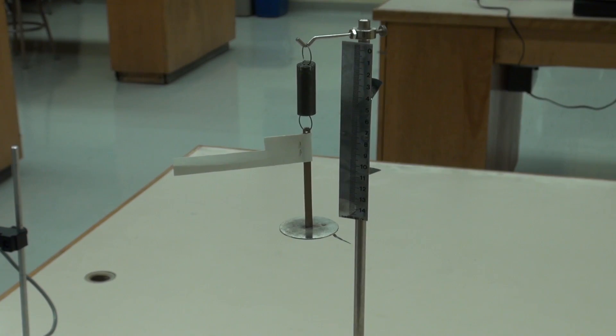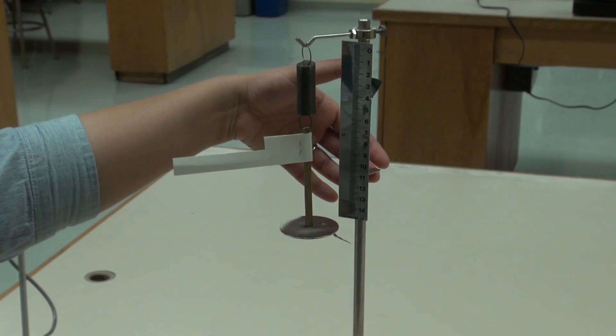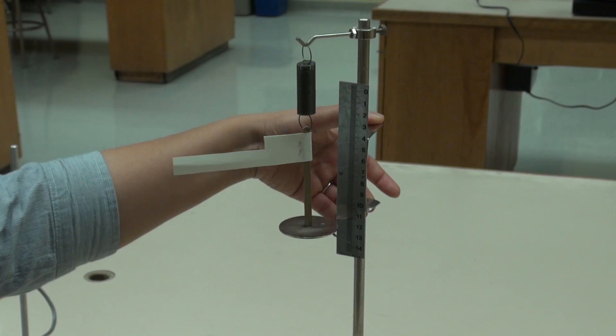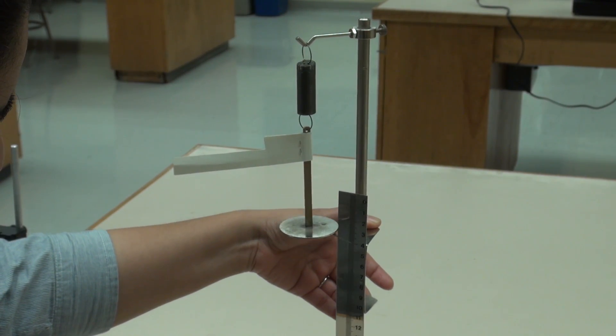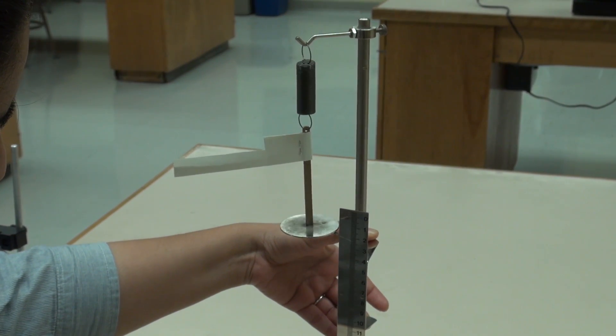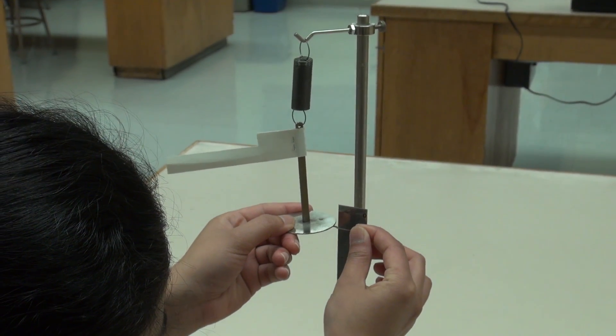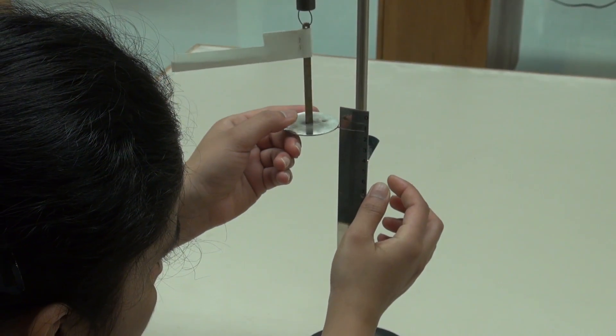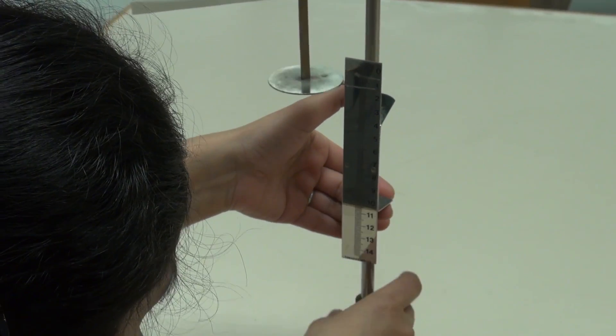The equipment consists of a hanging spring with a suspended pan on which masses can be placed. The first part of the experiment involves adding masses to the pan one at a time and recording the vertical position of the pan.